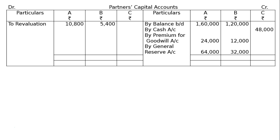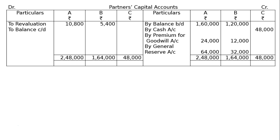The credit side is totaled and the balance carried down gives closing balances. Credit side totals: A rupees 2,48,000, B rupees 1,64,000, C rupees 48,000. The balance carried down — closing capital balances — are: A rupees 2,37,200, B rupees 1,54,000, and C rupees 48,000.